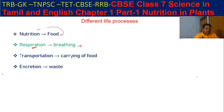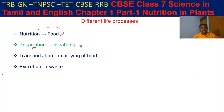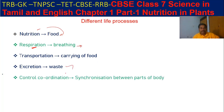Next is excretion, which means waste particles. Our nutrition slide contains things like proteins, calcium, nitrogen, carbon dioxide, and vitamins. After the body utilizes these, the leftover waste is removed — that process is called excretion. So the meaning of excretion is waste removal. Then comes control and coordination, which means the whole body control and coordinate system.